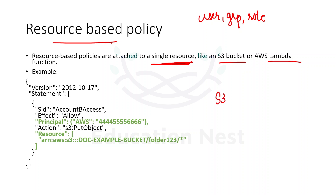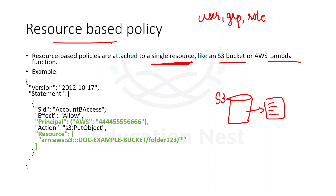Suppose I have an S3 bucket — I can attach a policy on the S3 bucket specifying who can access it. You can use the combination of both identity-based policies and resource-based policies.